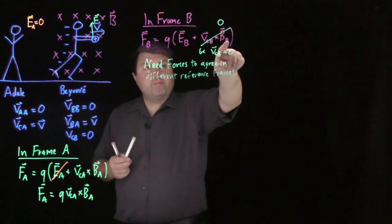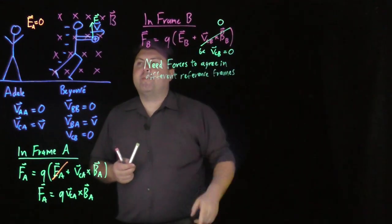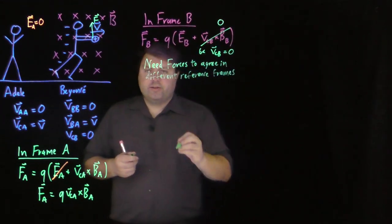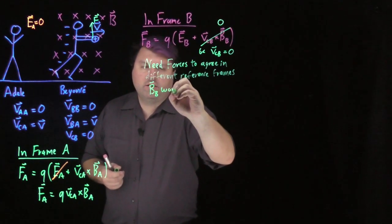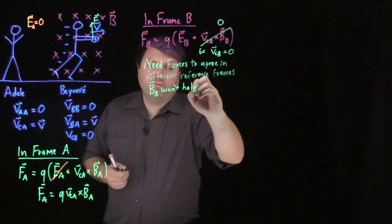No matter what we do to the magnetic field, we're still always going to be multiplying it by zero. So our B sub B won't help.